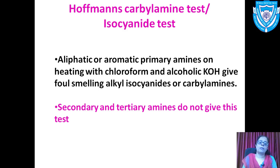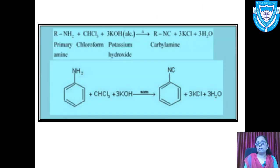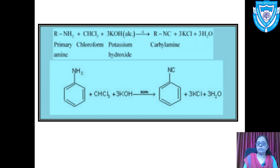In the reaction, a primary amine reacts with chloroform in the presence of alcoholic KOH and on heating gives the structure R–N≡C, which is a carbylamine — an alkyl isocyanide. KCl and water molecules are also liberated. Similarly, aniline undergoes the carbylamine test with chloroform and alcoholic KOH to give the corresponding carbylamine.